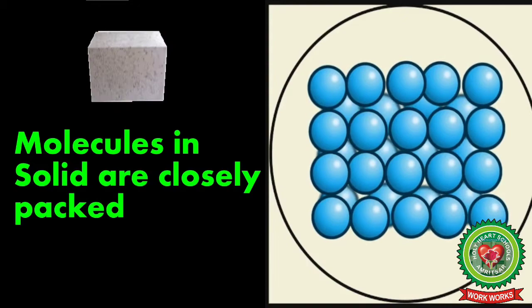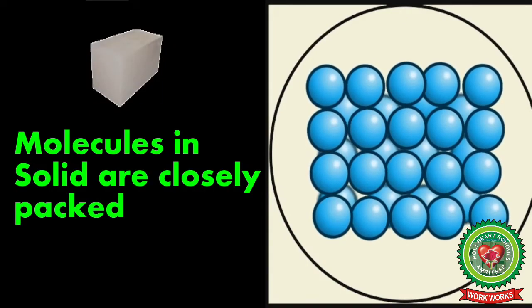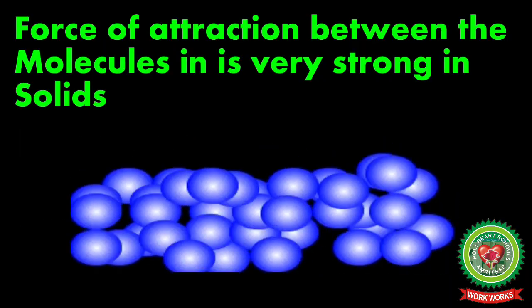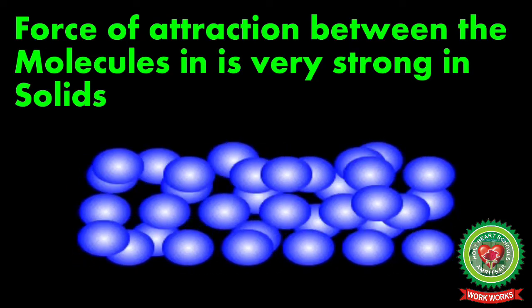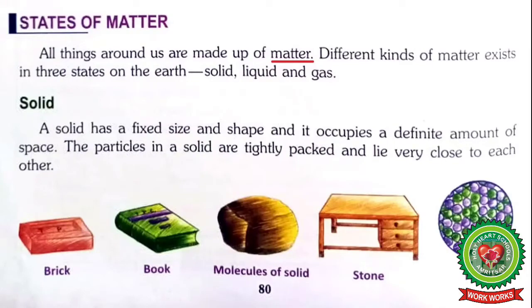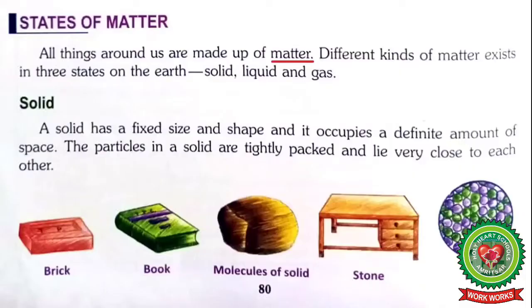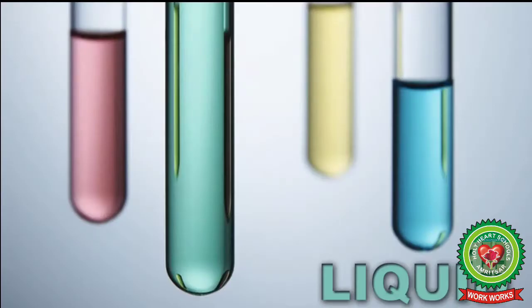The molecules in a solid do not have space to move about. Due to this reason, the force of attraction between the molecules is very strong in solids. Examples of solids are iron, a table, and chalk.